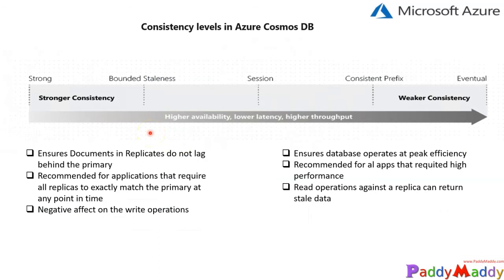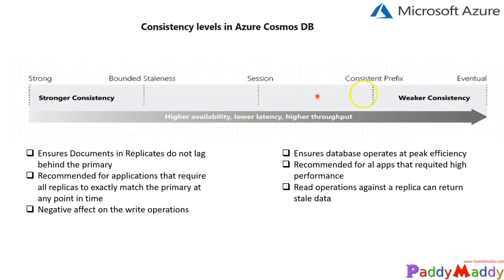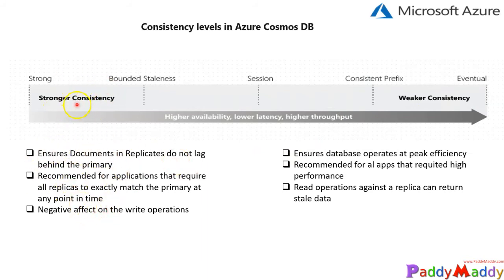With legacy databases, you have only two consistency options. With Azure Cosmos DB, you have five different types of consistency options, so the developer can choose based on their requirements. The five options are: Strong, Bounded Staleness, Session, Consistent Prefix, and Eventual. As you go from strong to eventual, the consistency gets weaker, and depending on your choice, you get stronger or weaker consistency SLAs.